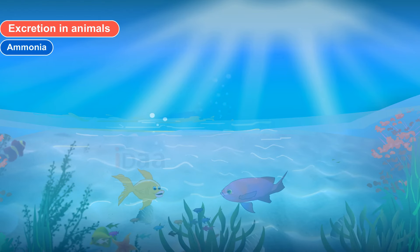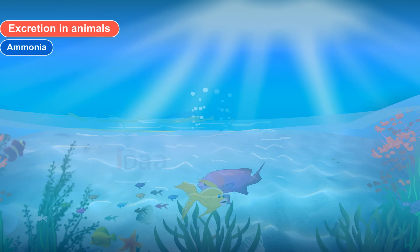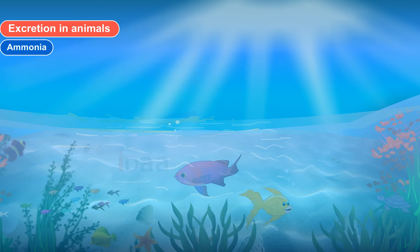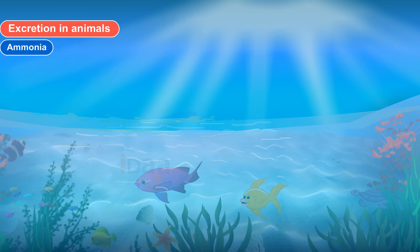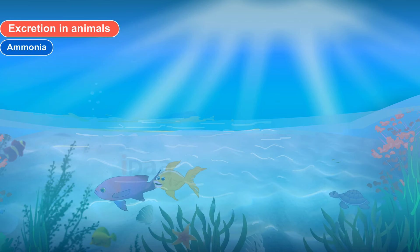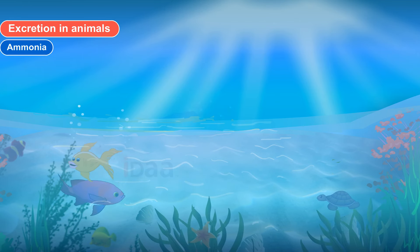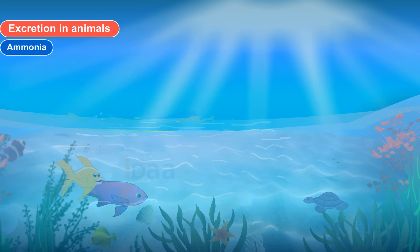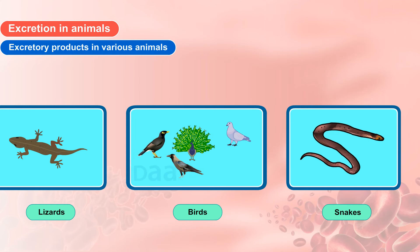Excretory products in various animals. Aquatic animals like fishes excrete ammonia. Lizards, birds, and snakes excrete uric acid.